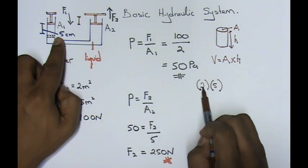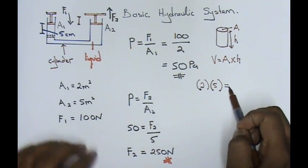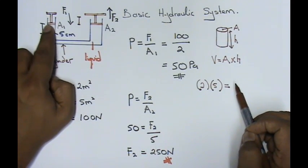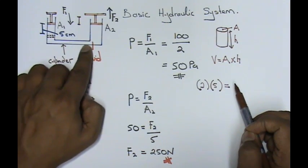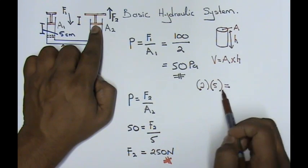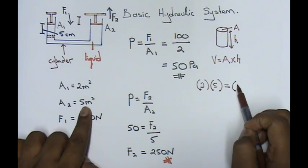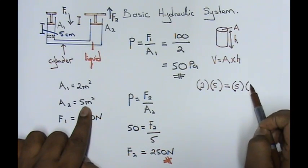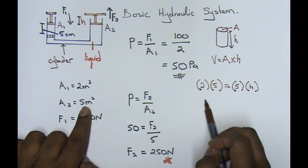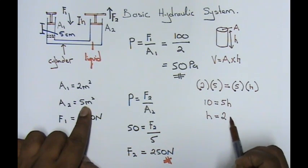Now, what I'm going to do is watch carefully. First, I'm going to take the area, which is over here, 2. I'm going to times it over here with 5. Now, do not worry because one is in meters, one is in centimeters. Do not worry about it. It's a direct comparison. Now, the volume that is displaced at this small piston is equal to the volume that is displaced at this large piston. So, the volume here and the volume here will be the same. At the large piston, the area is 5 and the height is what I want to find. So, 5 times 2, 10 equals to 5H. Your H equals to 2 centimeters.